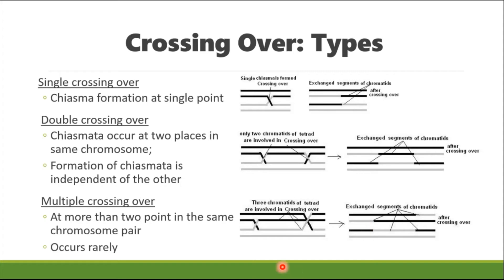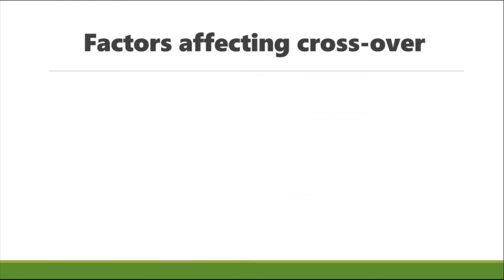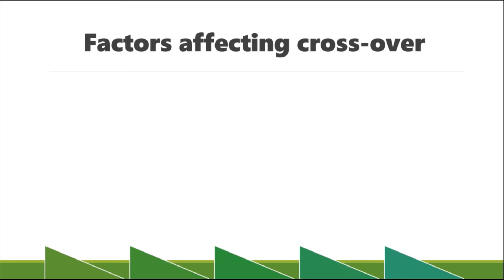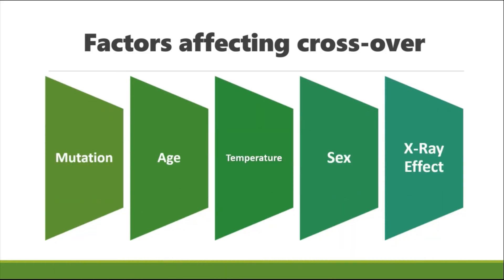Multiple crossing overs are quite rarely observed; single and double crossing over are the most common forms. Several factors affect crossing over: mutation tends to reduce the process; older age increases the rate of crossing over; temperature variations cause differences in crossing over frequency in certain chromosomal regions; male mammals show a reduced tendency for crossing over compared to females; and X-ray radiation can increase crossing over, especially near the centromere.